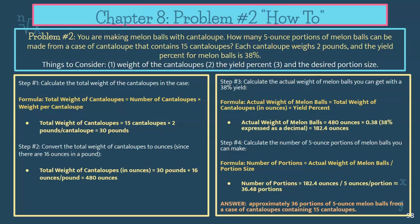Now problem number two. You are making melon balls with cantaloupe. You want to provide five-ounce portions of melon balls to each guest. A case of cantaloupes contains 15 cantaloupes, each cantaloupe weighs two pounds, and the yield percent for the melon balls is 38%. Things to consider: the weight of the cantaloupes, the yield percent, and the desired portion size. The first thing you're going to do is calculate the total weight of the cantaloupes in the case.